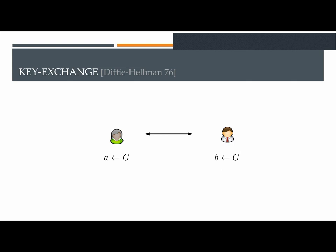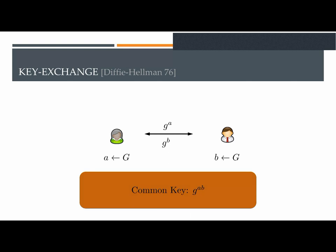In order to do so, they sample secret exponents and exchange elements of a publicly known group. Using their secret information, they can agree on a common element of the group, which is equal to g to the ab, which is supposed to be hard to guess without this secret information.